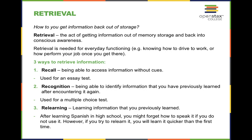Now that we've gone through encoding and storage — including short-term and long-term memory — we have retrieval. What good is that information if we're not able to retrieve it and bring it back into conscious awareness? There are three ways of getting information out of memory: recall, recognition, and relearning.